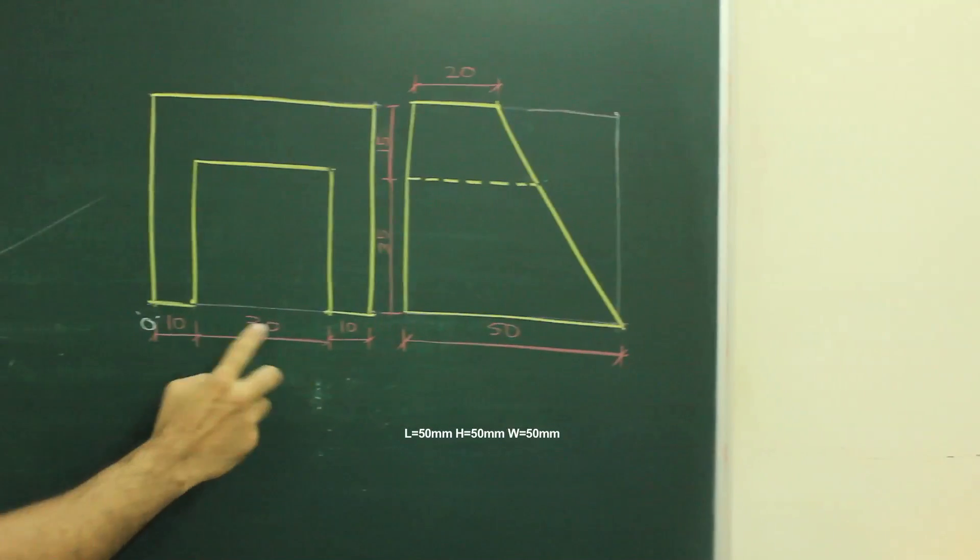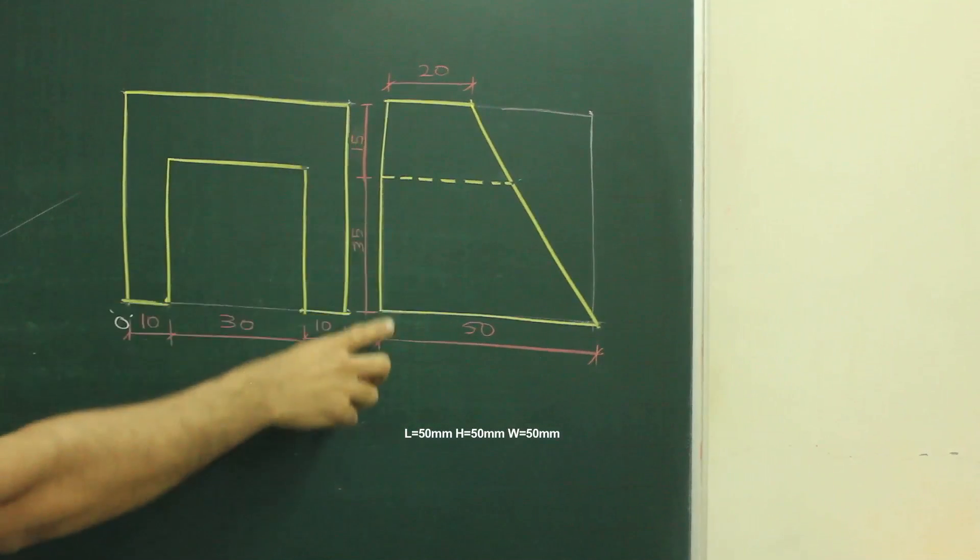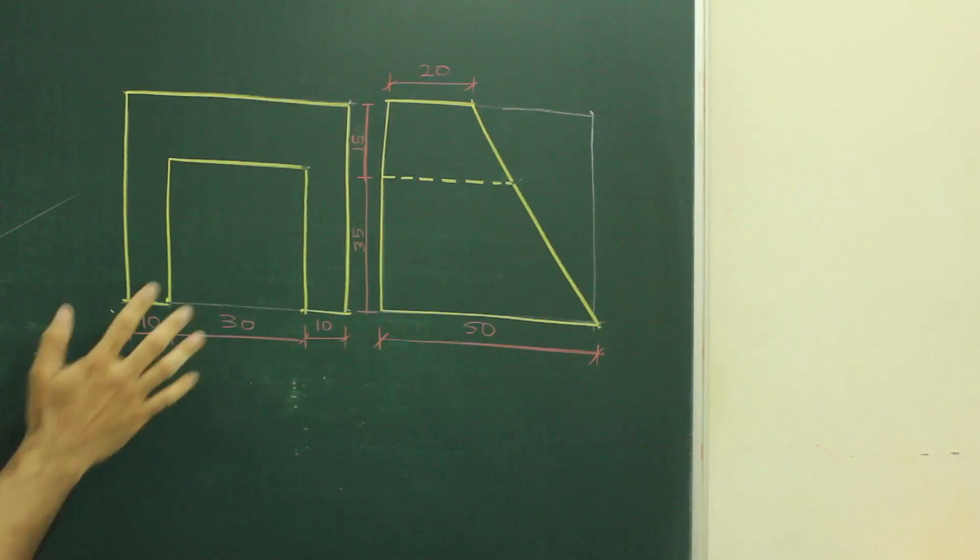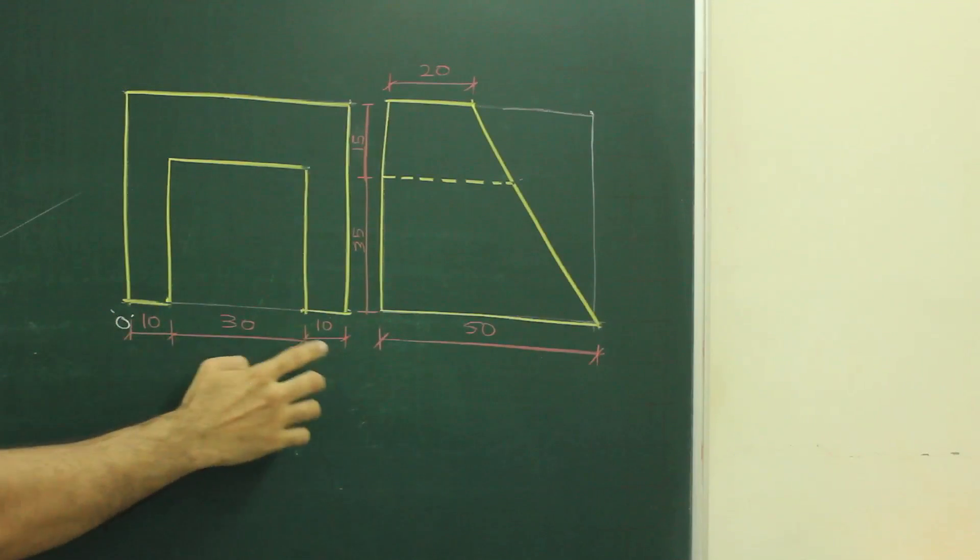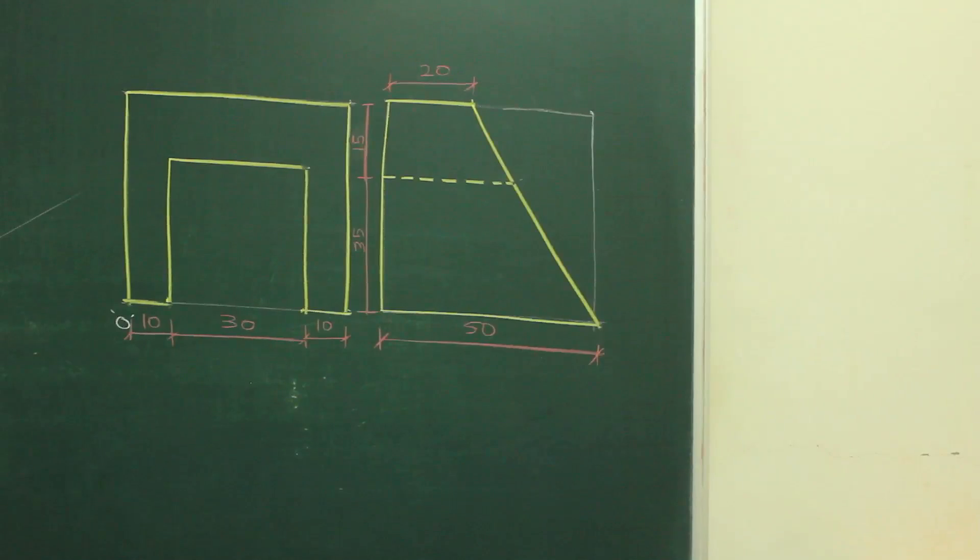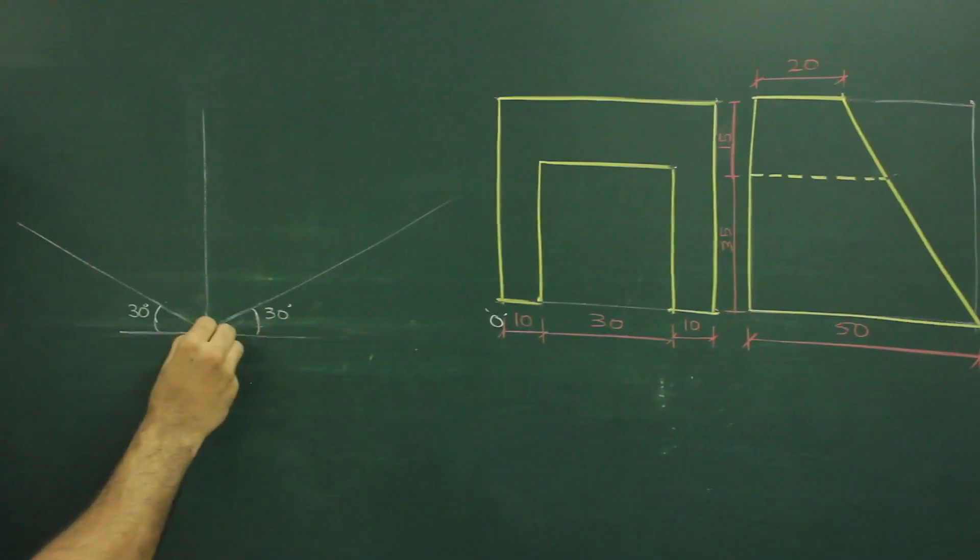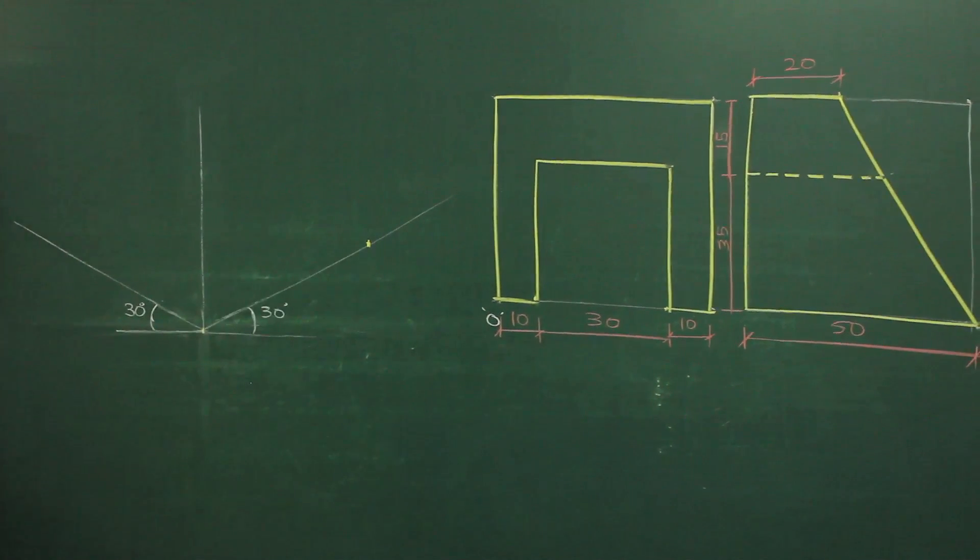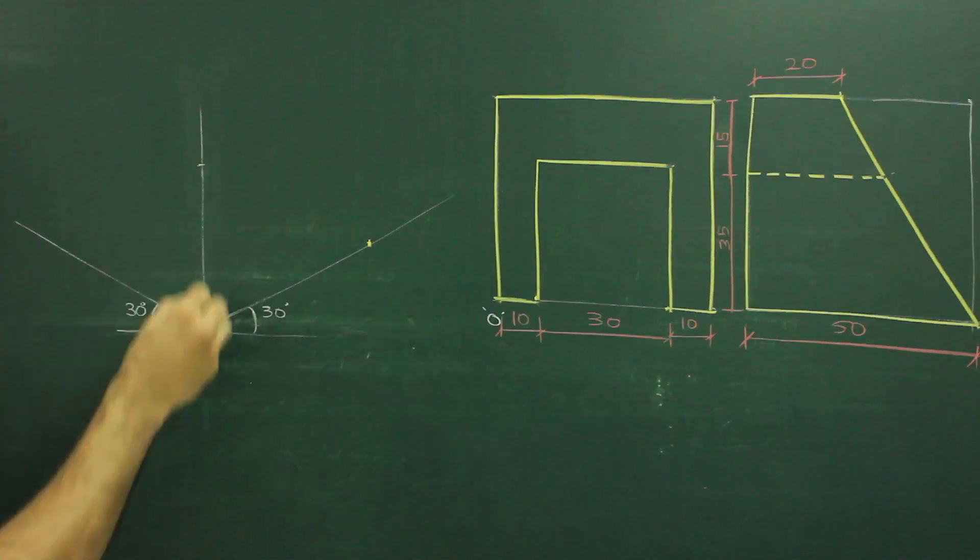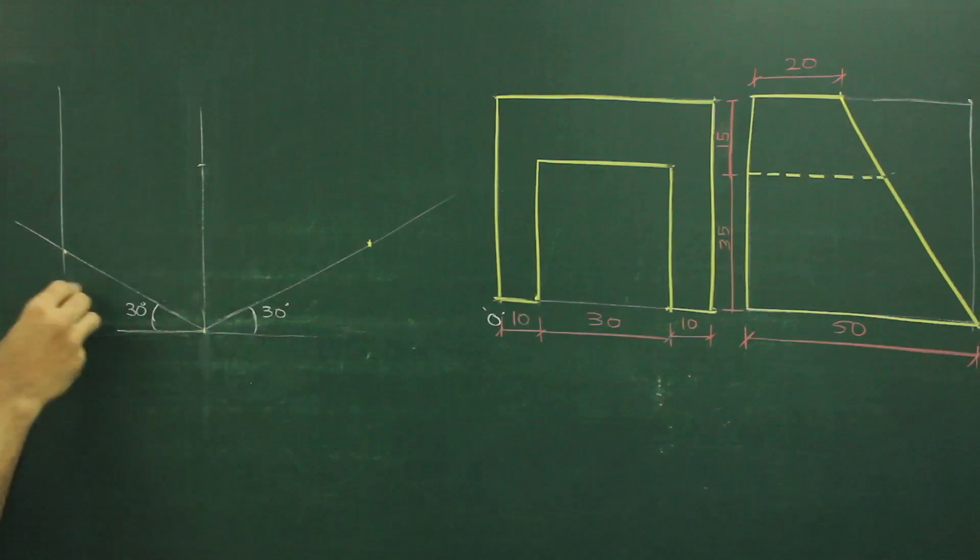In this sum, length is 50, height is 50, and width is also 50. So first we will see they have given 50 on the right hand side, so we will mark 50 on right hand side, we will go up by 50 and on left hand side also we will take 50.